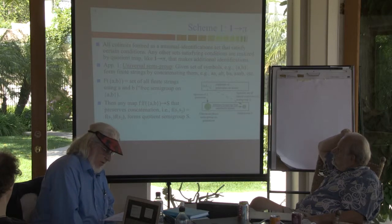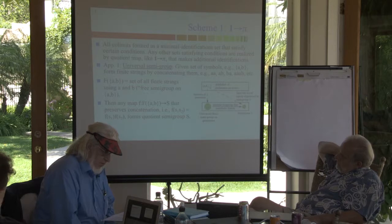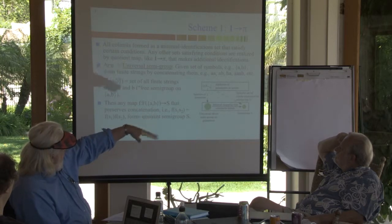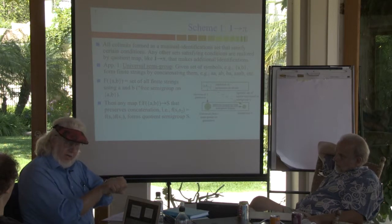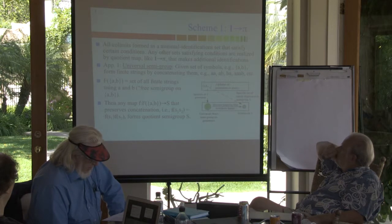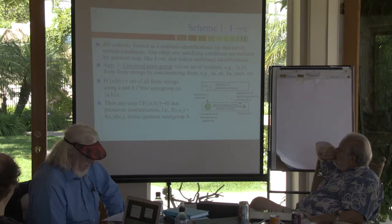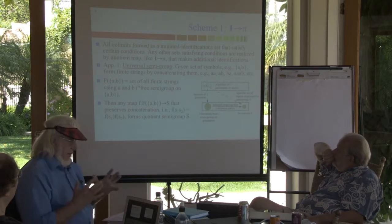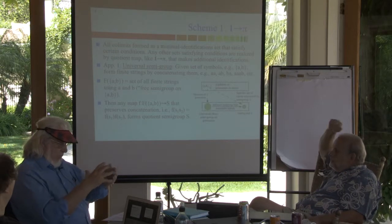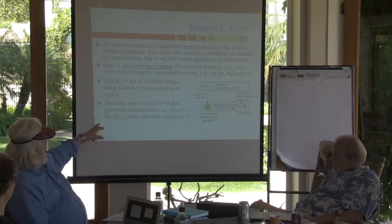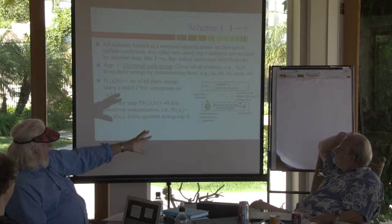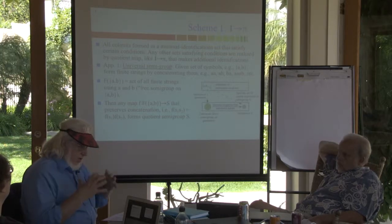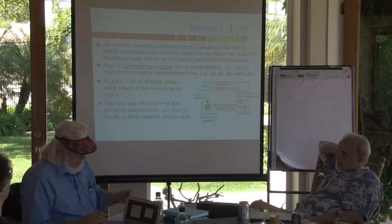One simple mathematical model for doing that is what's called a semigroup. The idea is to take some alphabet like A and B, then form all finite strings — AA, B, AB, everything — where the operation is just putting two strings together to make another string. That's called the universal semigroup on that alphabet. It has a universal property in the sense of category theory. Any way in which you start mapping those strings together in a way that preserves concatenation will get you to a quotient group.